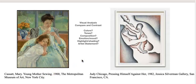In this example, I have a Mary Cassatt painting of a young mother sewing and I have a Judy Chicago work with a child pressing against her. Both of these art pieces depict a parent with some type of bonding with their child, either happy or sad.